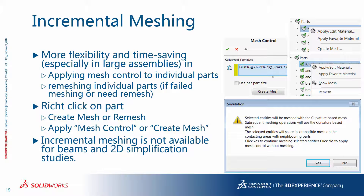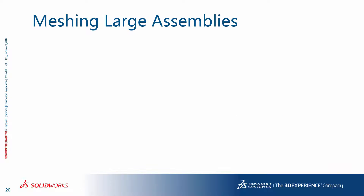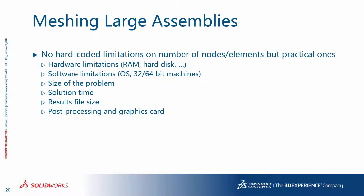Incremental meshing is not available for beams and 2D simplification studies. Some additional points to remember when meshing large assemblies: there are no hard-coded limitations by the program itself on the number of nodes and elements, but there are practical ones. These include hardware limitations such as amount of RAM and hard disk, software limitations from the operating system such as those on 32-bit machines (less so on 64-bit ones), and size of the problem, solution time, result file size, and post-processing and graphics card.